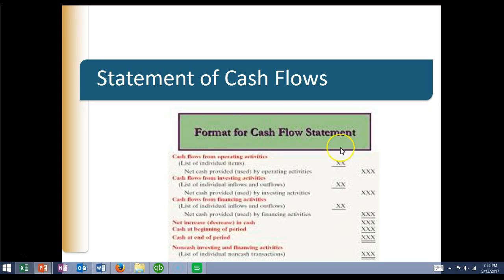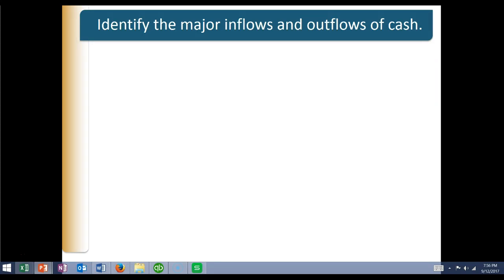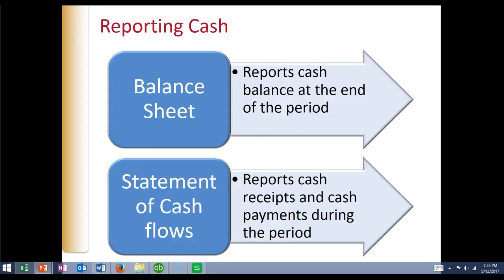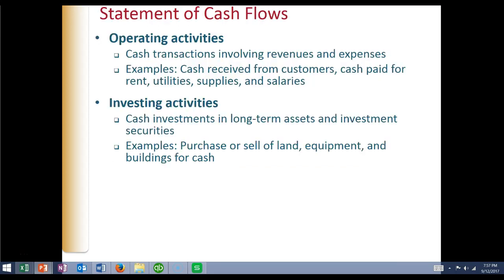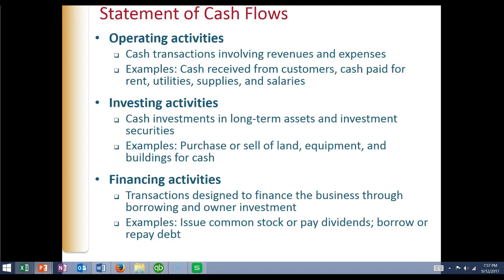The statement of cash flows is something we talked about at the very beginning of chapter one. Cash gets reported on the balance sheet, where you just see a snapshot of the cash balances at the end of the period. Then there's another statement called the statement of cash flows, where we report the cash receipts and cash payments during the period in detail. We divide all transactions into three types of activities: operating activities, investing activities, or financing activities.